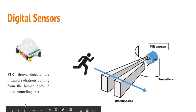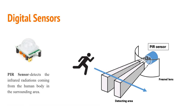Next we will see some digital sensors like PIR. What is a PIR sensor? It is used to detect the human body. For example, it can tell you when a person enters a room and you can give a notification based on that.